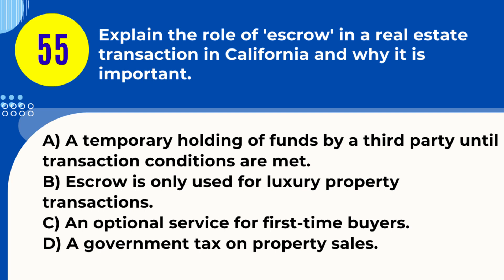Question 55. Explain the role of escrow in a real estate transaction in California and why it is important. A. A temporary holding of funds by a third party until transaction conditions are met. B. Escrow is only used for luxury property transactions. C. An optional service for first-time buyers. D. A government tax on property sales. Answer: A. A temporary holding of funds by a third party until transaction conditions are met. Explanation: Escrow in California real estate transactions involves a neutral third party holding funds and documents until all conditions of the transaction are met, ensuring a secure and orderly process.